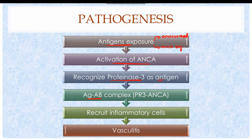Proteinase 3 acts as an antigen, and antigen-antibody complexes are formed — basically proteinase 3-ANCA complexes. These antigen-antibody complexes recruit inflammatory cells such as T lymphocytes, macrophages, and neutrophils to the site, resulting in inflammation of blood vessels known as vasculitis. The inflammation in Wegener's Granulomatosis is granulomatous inflammation.